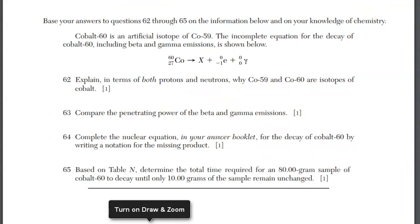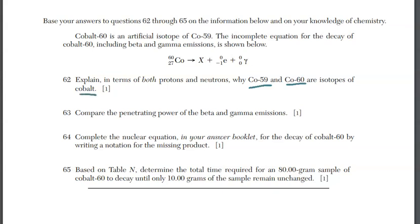We are at the last group, questions 62 through 65. For question 62, explain in terms of both protons and neutrons why cobalt-59 and cobalt-60 are isotopes of cobalt. Isotope is one of those special words you have to know the definition of: same number of protons — meaning atoms of the same element — but different number of neutrons. Cobalt-60 has one more neutron than cobalt-59, while the proton count stays the same.